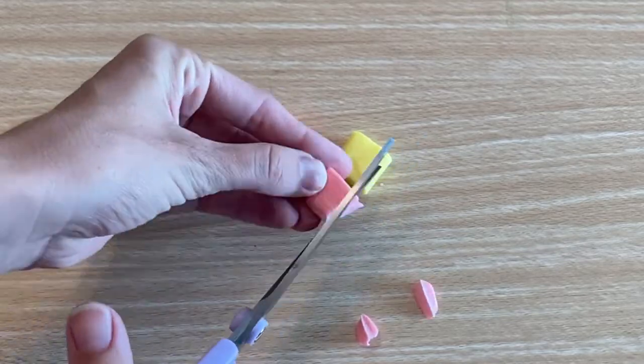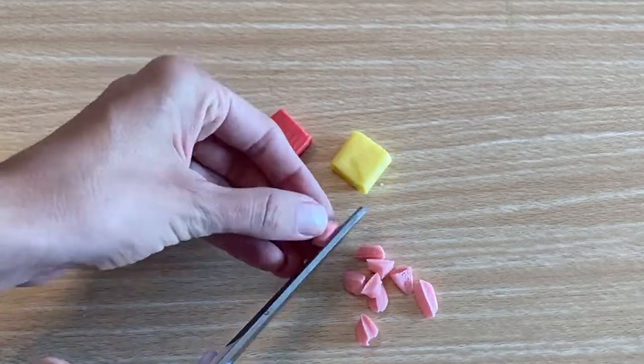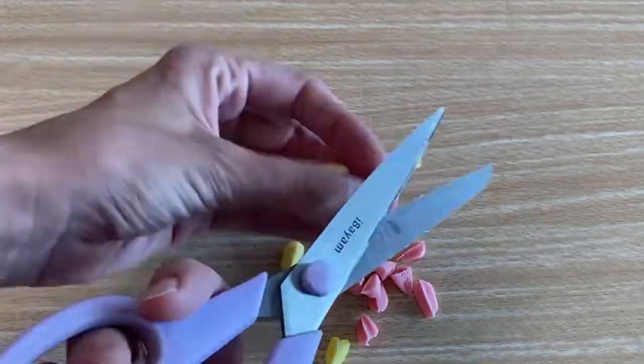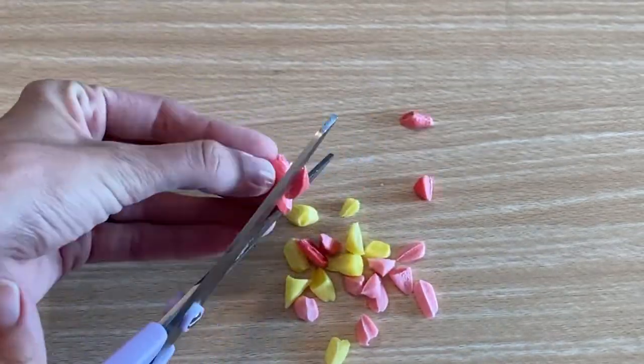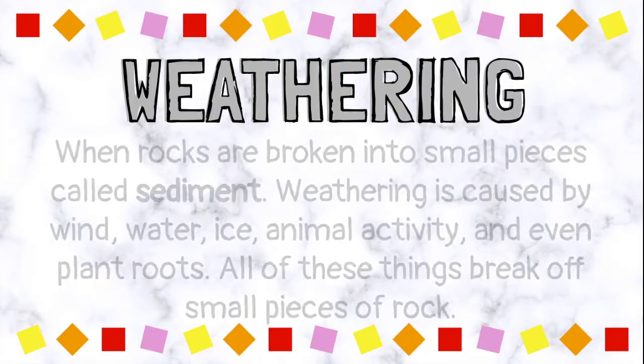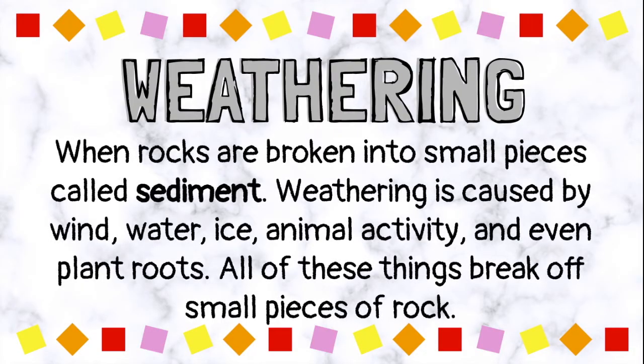Either way, our rocks are being weathered. Weathering happens when rocks are broken into small pieces called sediment. Weathering is caused by wind, water, ice, animal activity, and even plant roots. All of these things break off small pieces of rock.